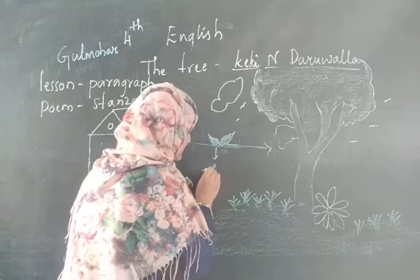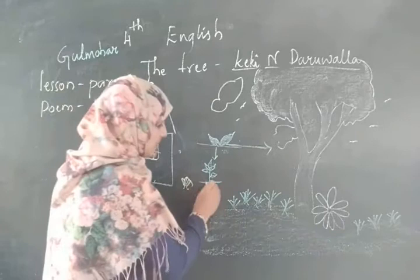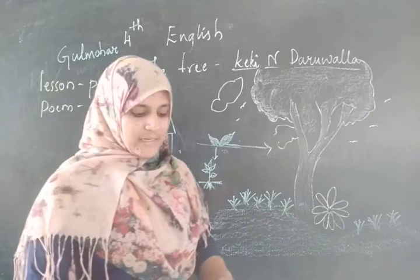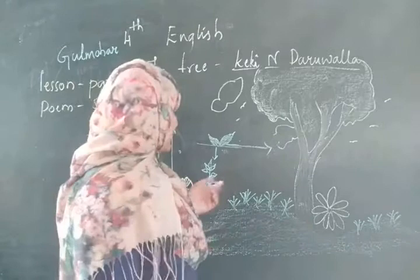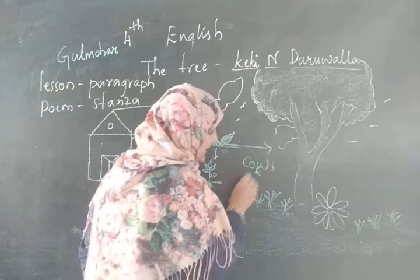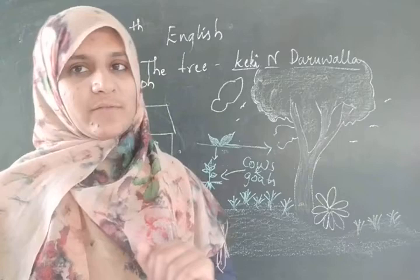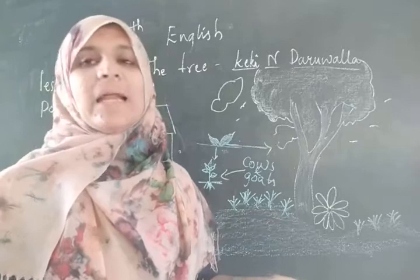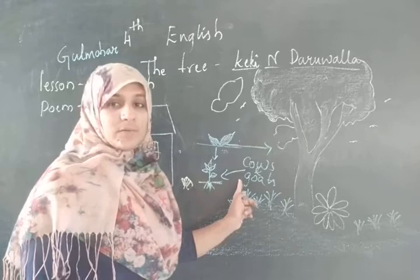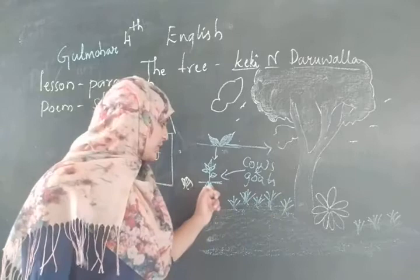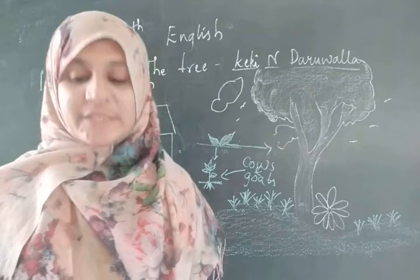When the plant was very small, the branches were so low that we had to draw the goats and cows away. The cows and goats might eat the plant. So the children would shoo away the animals — the cows and goats. Which animals are mentioned in the poem? Cows and goats. If we don't shoo away the cows or goats, they would eat the plant.